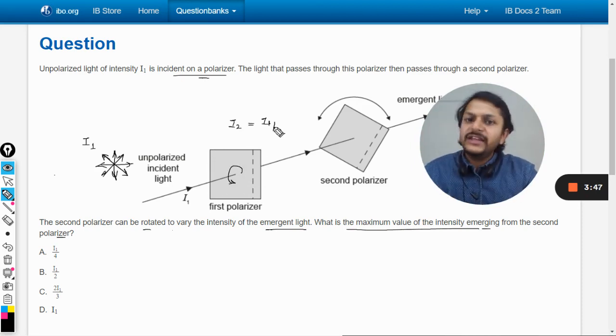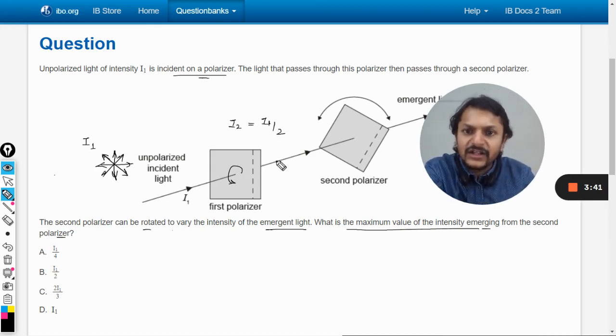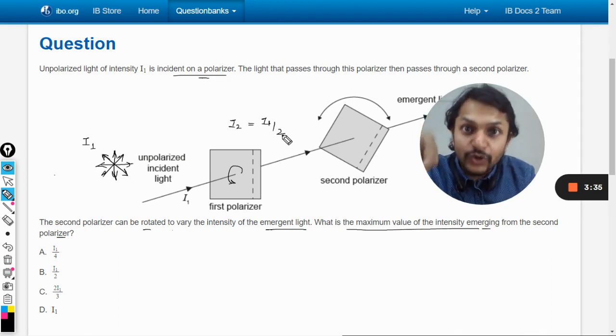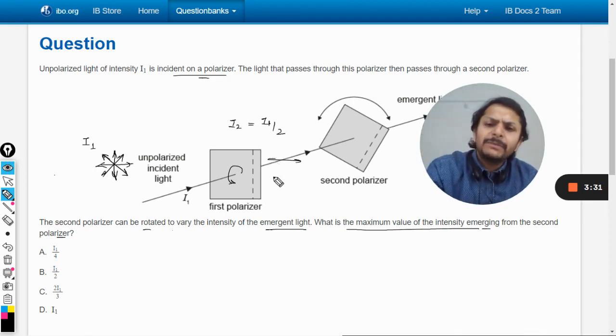If we rotate this polarizer, the intensity does not change. Yes, the axis changes. For example, here the axis is vertical so the output will be vertical. If this was horizontal, intensity will be I₁ by 2 only, but the output will also be horizontal.